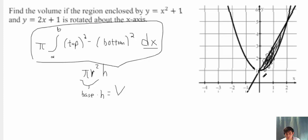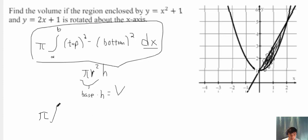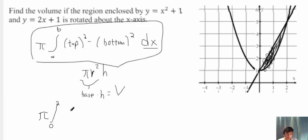Let's go ahead and evaluate this formula. We're going to start with pi, then the integral from a to b, where a and b represent where the two functions intersect. They first intersect at x equals 0 and intersect again at x equals 2. The top function is the straight line, y equals 2x plus 1, so we write 2x plus 1 and always remember to square it, as we are finding the volume.